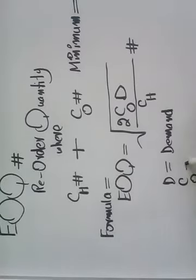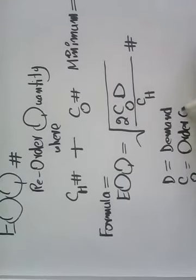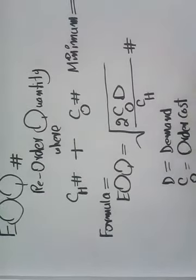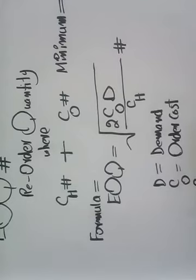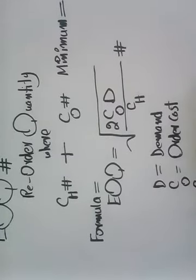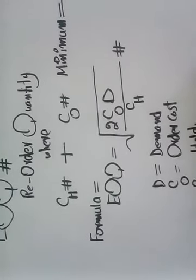So D is equal to demand we have, C not is order cost or ordering cost, C of H is holding cost, holding one unit for a year.